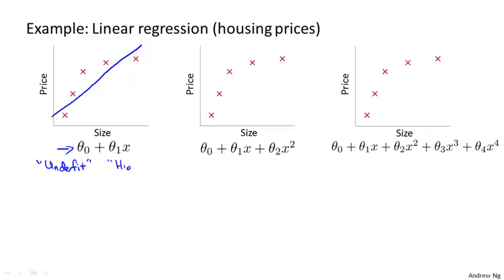And another term for this is that this algorithm has high bias. Both of these roughly mean that it's just not even fitting the training data very well. The term bias is kind of a historical or technical one, but the idea is that if we're fitting a straight line to the data, then it's as if the algorithm has a very strong preconception or a very strong bias that housing prices are going to vary linearly with their size. And despite the data to the contrary, despite the evidence to the contrary, its preconceptions or bias still causes it to fit a straight line, and this ends up being a poor fit to the data.